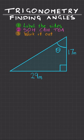How to find missing angles in right-angle triangles using trigonometry. Step 1: Label the sides. We have the hypotenuse, the opposite, and the adjacent.